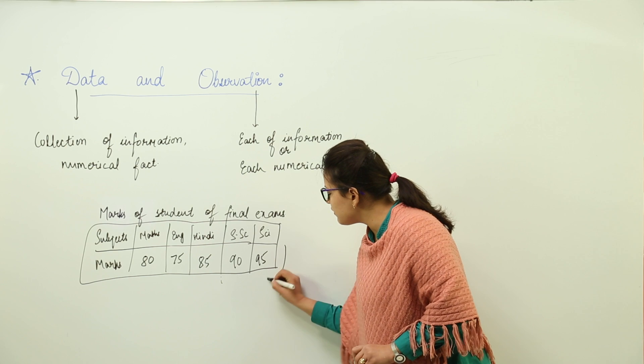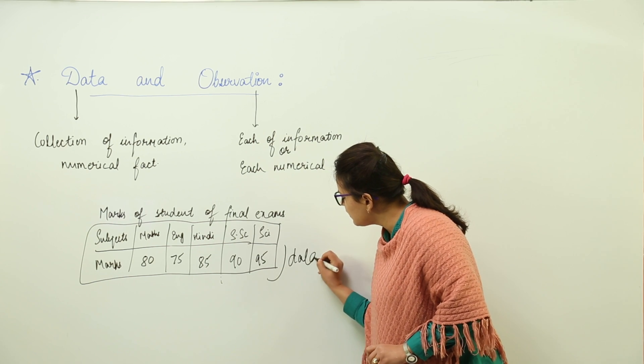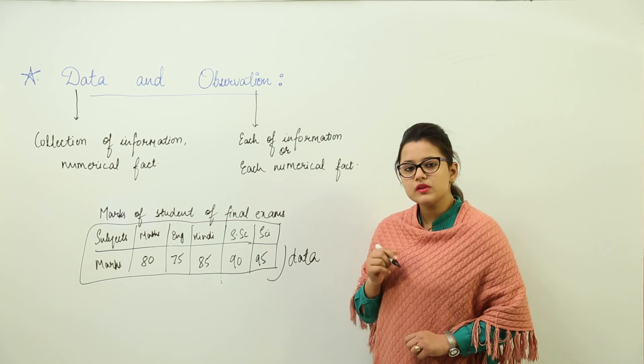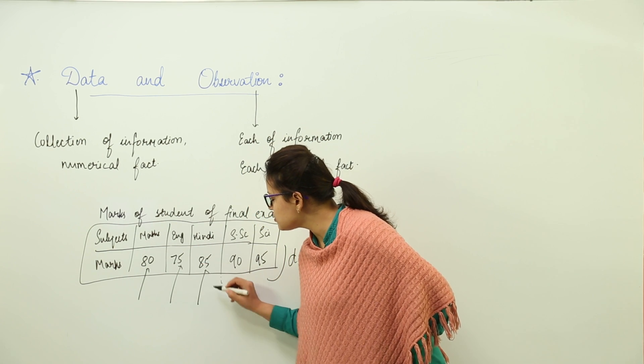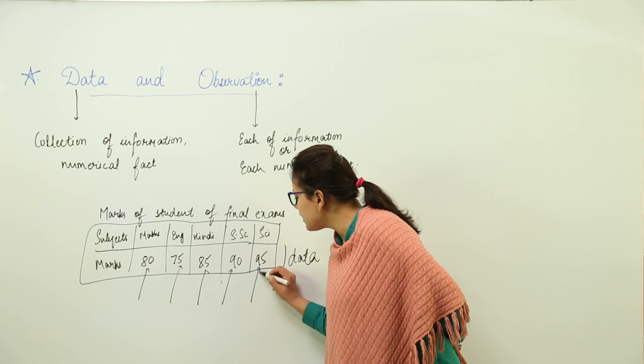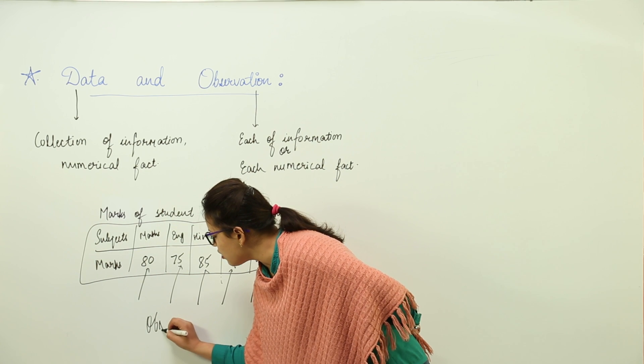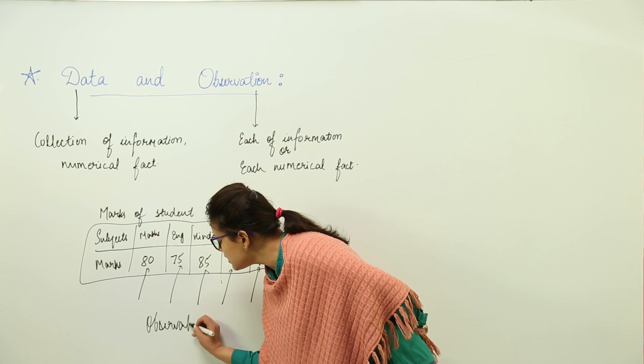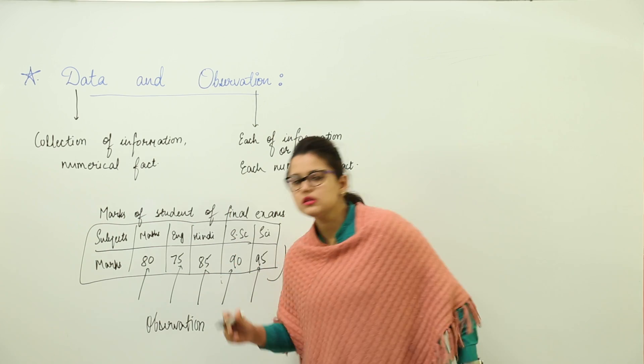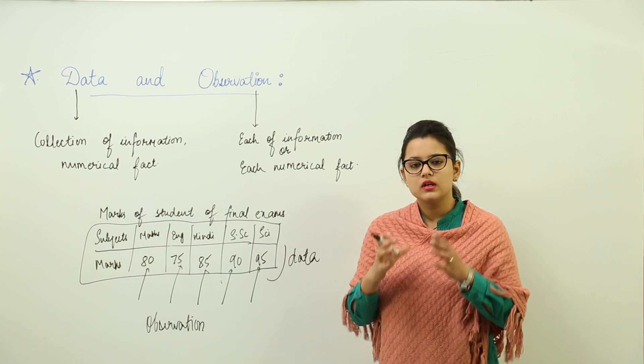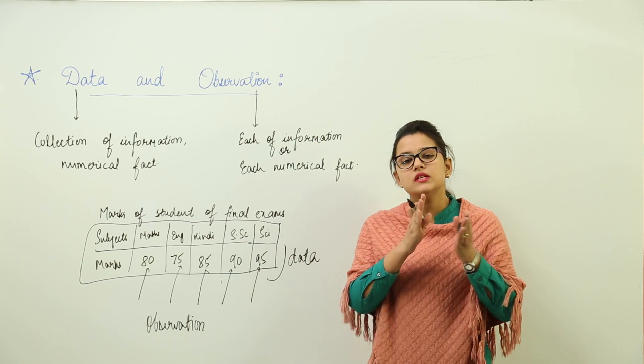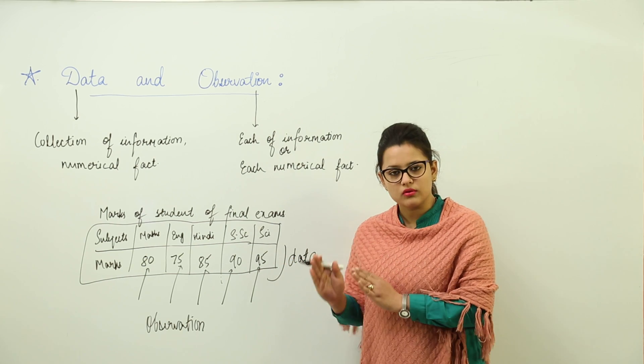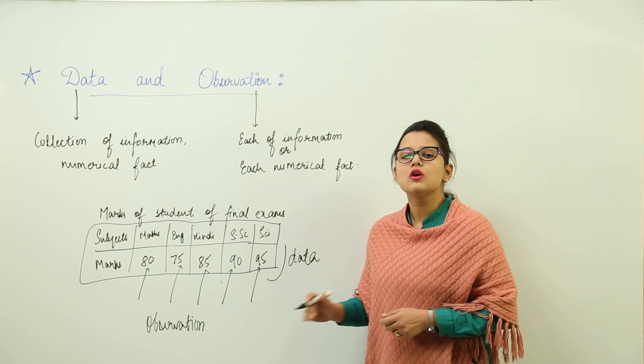Now this everything is representing my data. What is observation? Each of these, that is each of these five values, are representing my observation. That means the collection of all the values together is known as data, whereas each individual value out of the data is known as my observation.